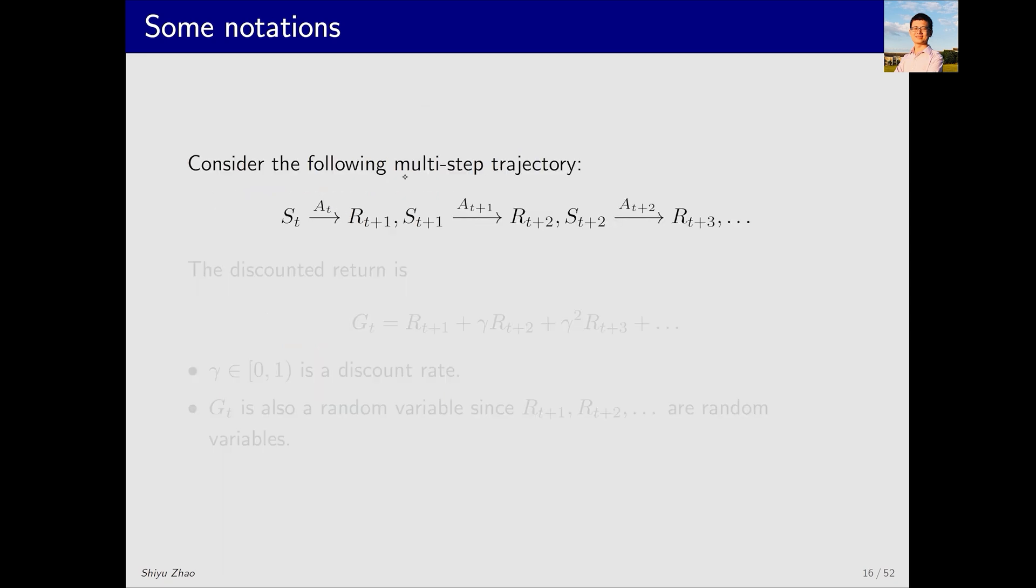This single step process can be extended to a multi-step trajectory. Starting from s_t, taking action a_t leads to the next state, receiving a reward and this continues to form a multi-step trajectory. We can calculate the discounted return for this trajectory, denoted by the symbol G_t, which sums up these immediate rewards while considering the discount rate gamma.